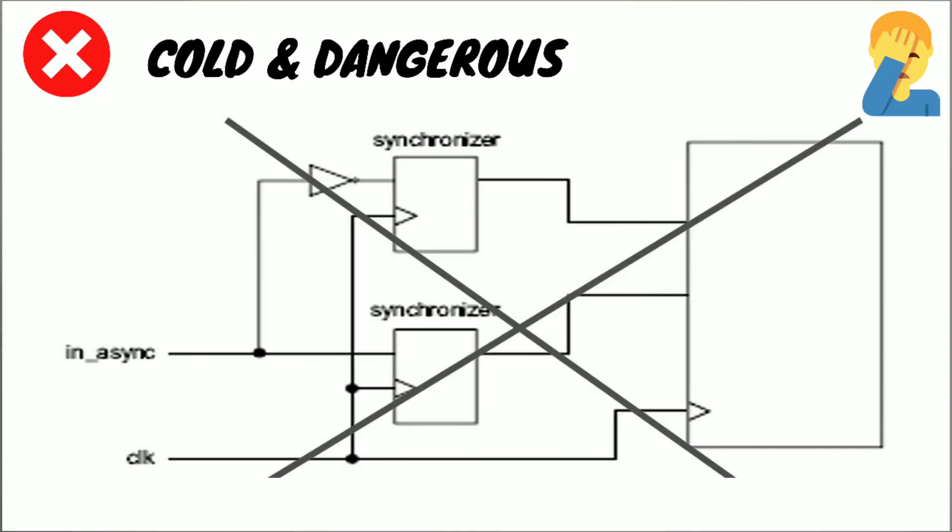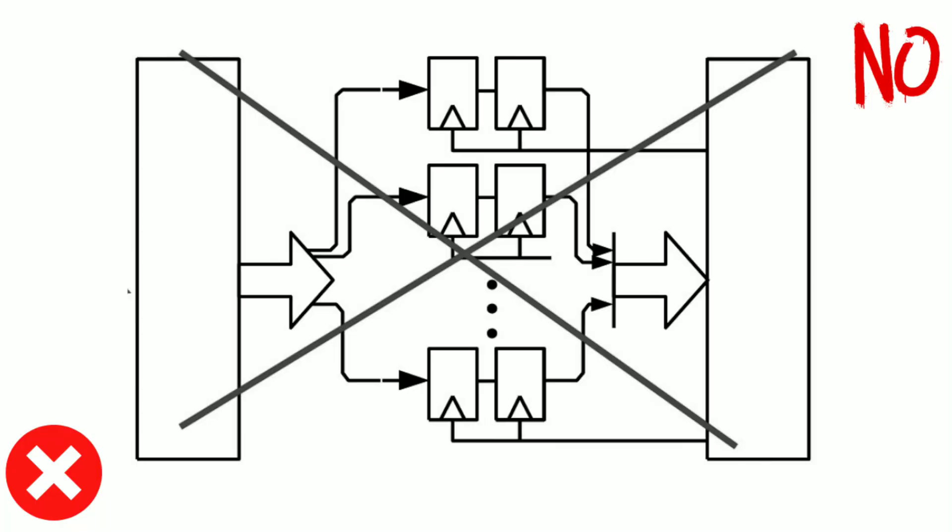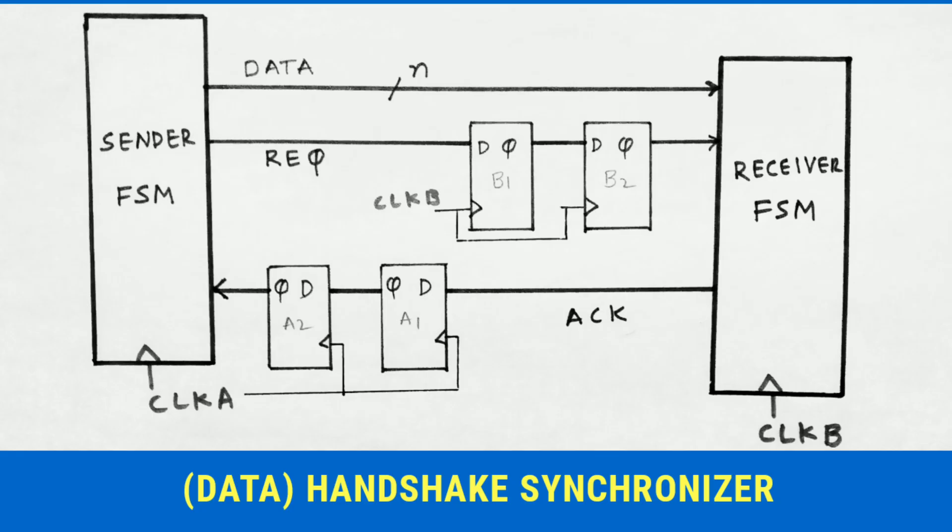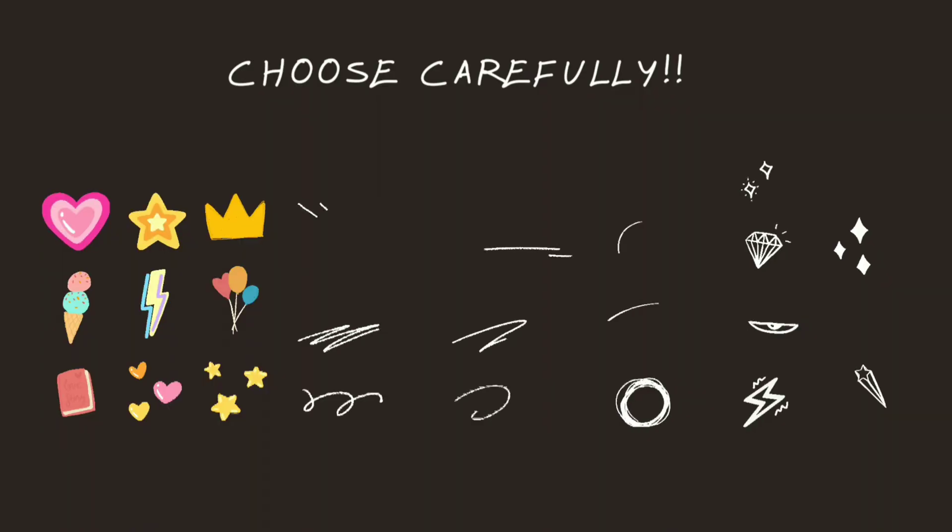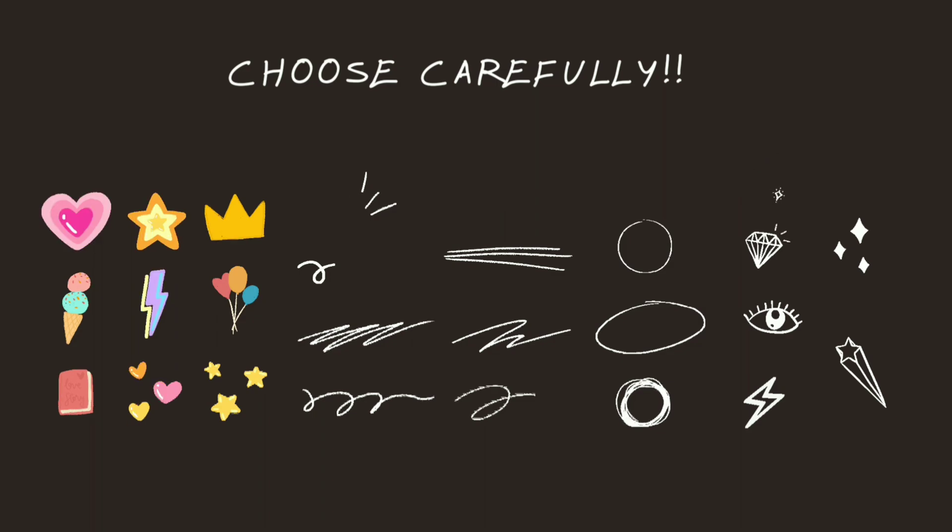So as you can see, this is not the way to synchronize a signal. Here we are synchronizing the signal at two points, so this is not allowed in synchronization. Suppose a signal is having a width of 10 bits, we must not synchronize each and every single bit. We must use a proper method. For example, we can use a handshake synchronizer instead of using a two-flop synchronizer. So choosing a proper synchronization technique is also important while synchronizing signals.